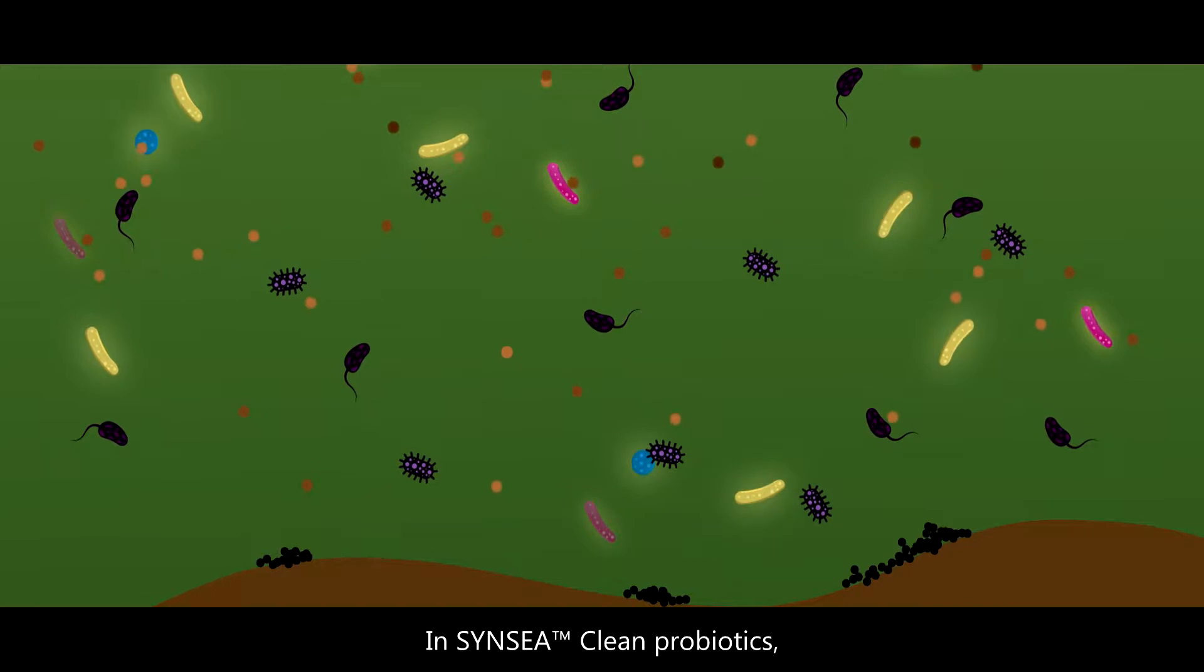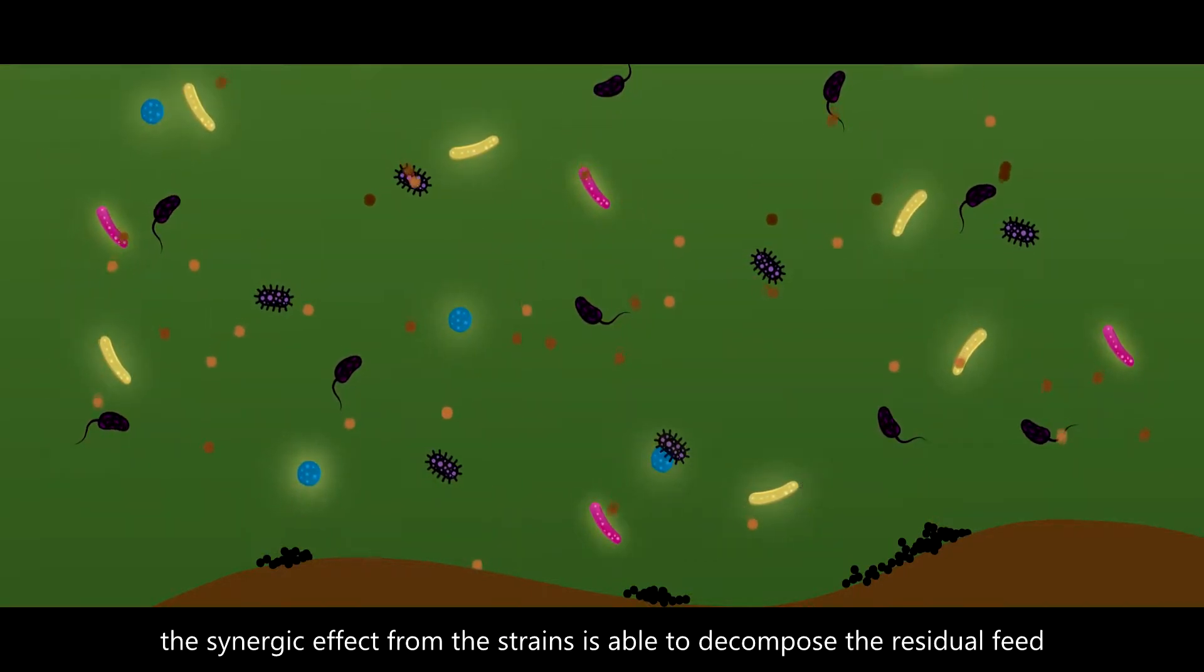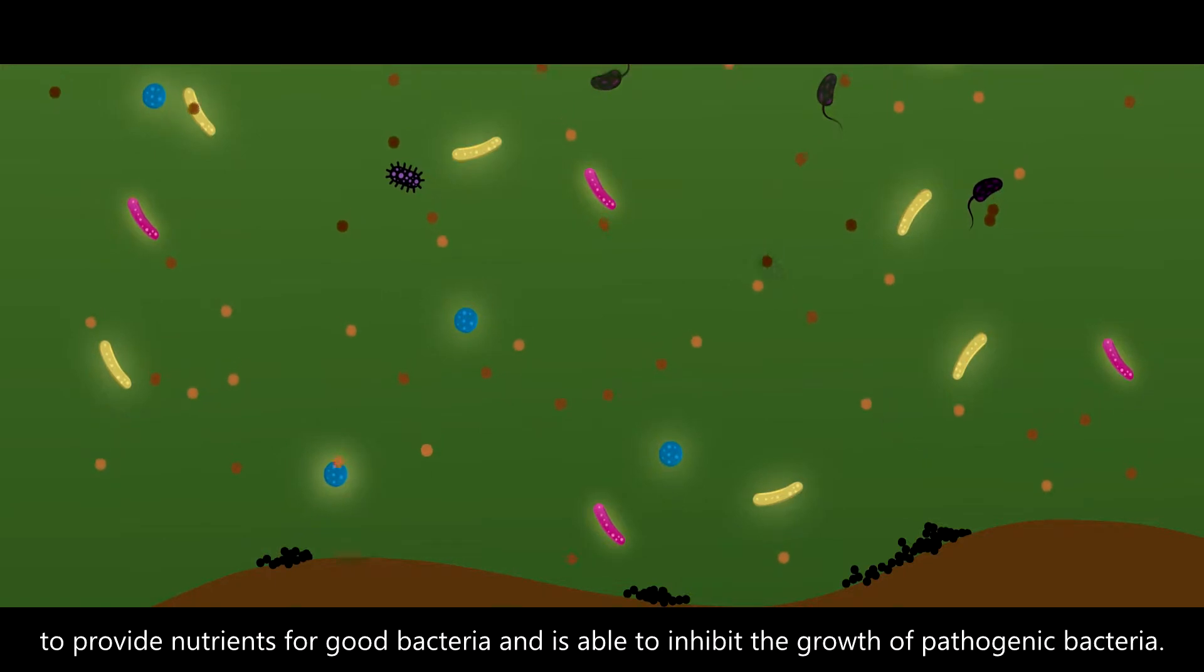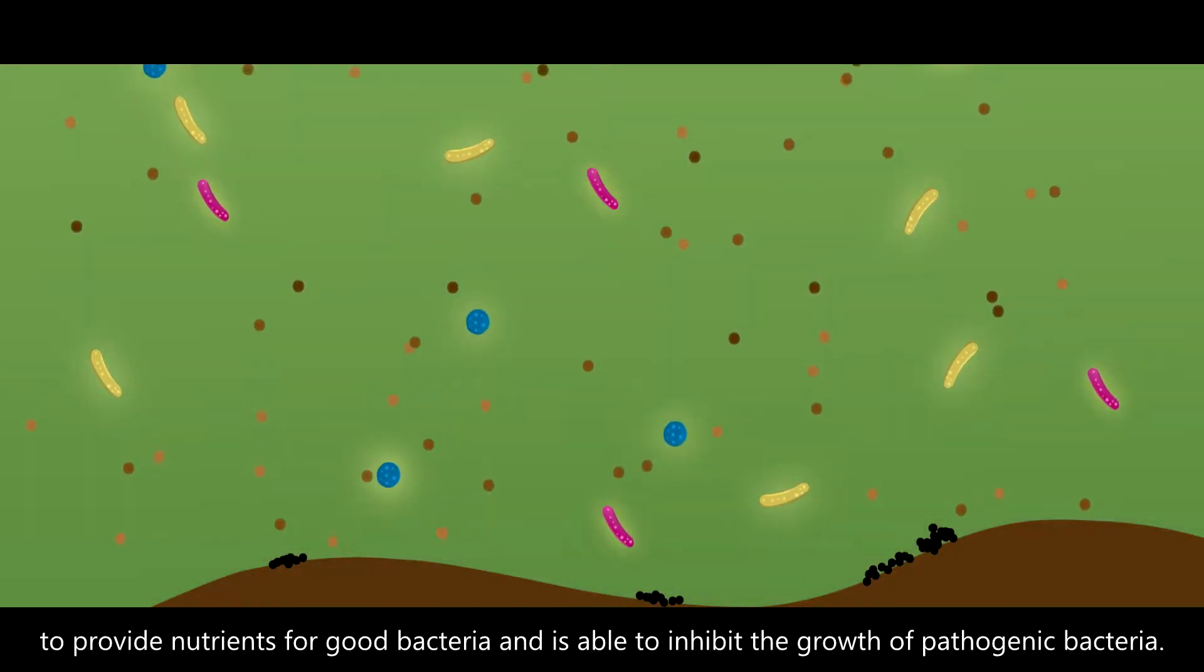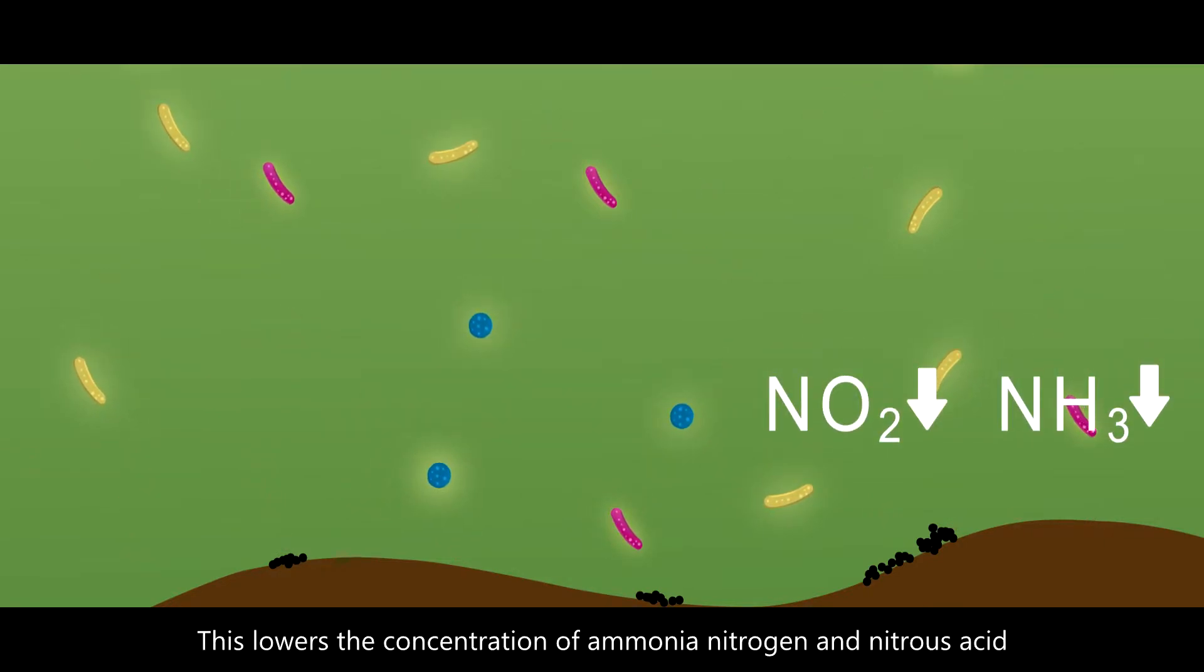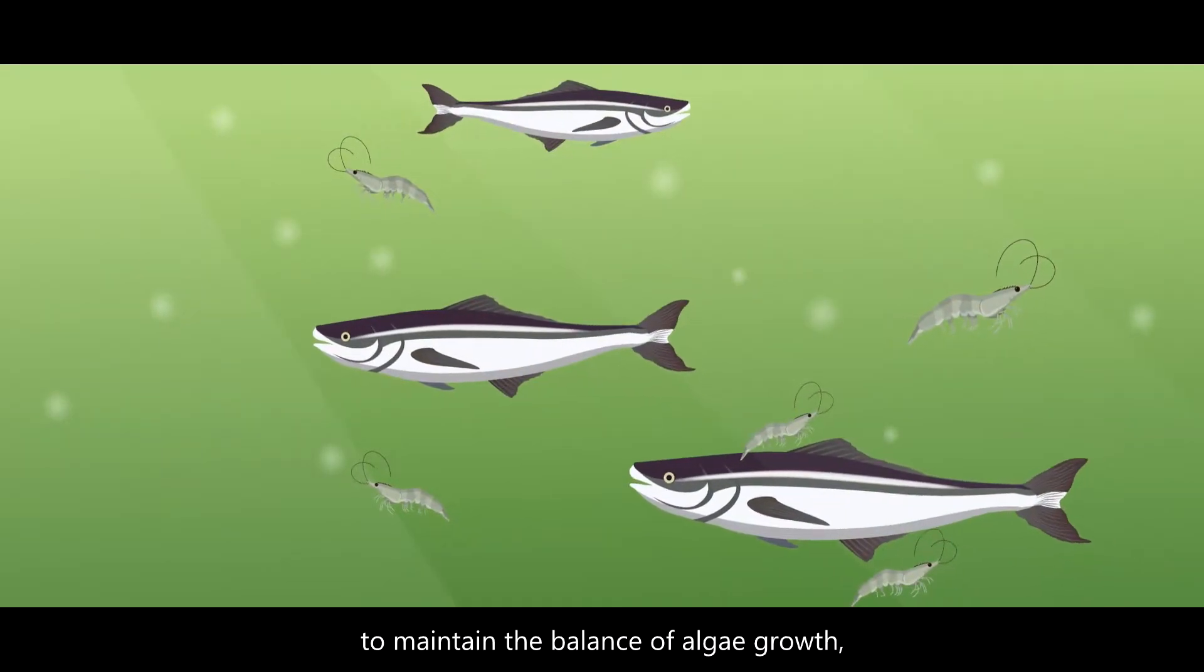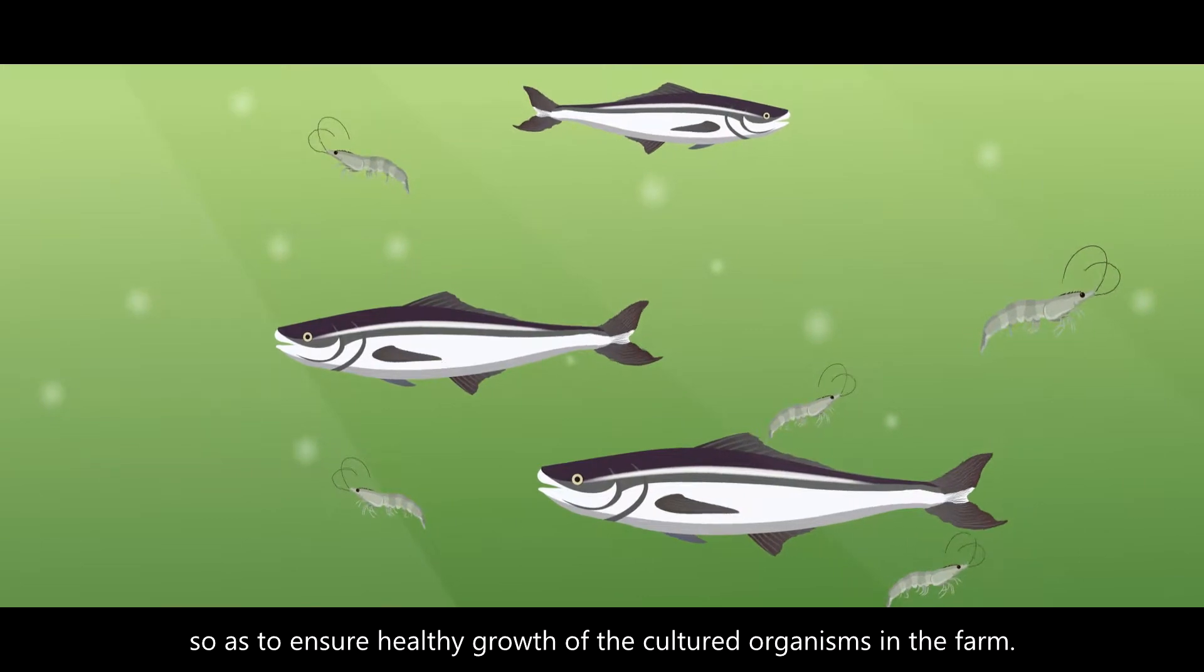In SINCE-C clean probiotics, the synergistic effect from the strains is able to decompose the residual feed to provide nutrients for good bacteria and is able to inhibit the growth of pathogenic bacteria. This lowers the concentration of ammonia nitrogen and nitrous acid to maintain the balance of algae growth, so as to ensure healthy growth of the cultured organisms in the farm.